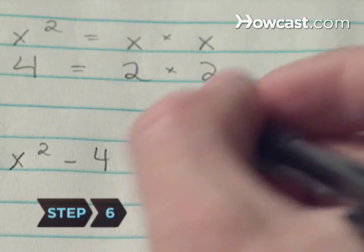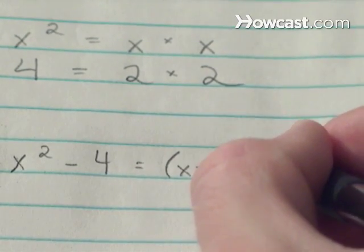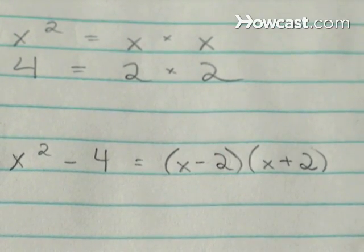Step 6: Write the second square in the right side of the parentheses. Since the second term is being subtracted, each set of parentheses must have a different sign.